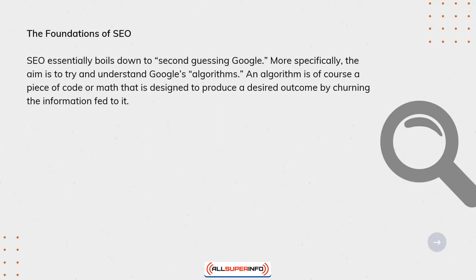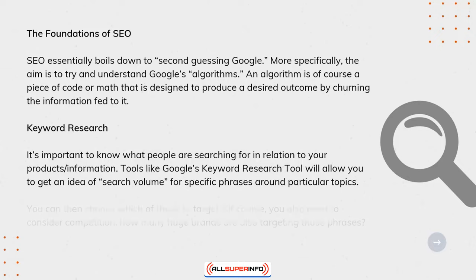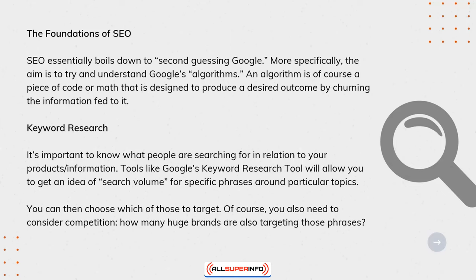Keyword Search: It's important to know what people are searching for in relation to your products and information. Tools like Google's keyword research tool will allow you to get an idea of search volume for specific phrases around particular topics. You can then choose which of those to target. Of course, you also need to consider competition — how many huge brands are also targeting those phrases?